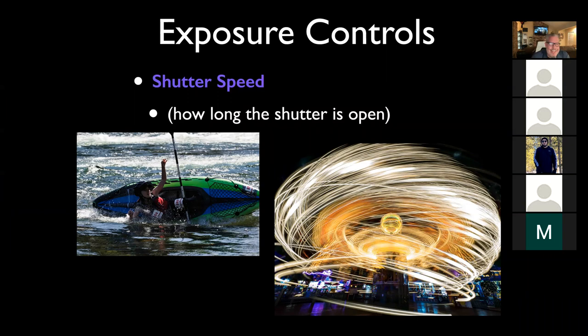The one on the left is a very short shutter speed, like one one-thousandth of a second or faster, because you can see the individual droplets of water. Whereas the picture on the right is a very long exposure - probably 10 to 15 minutes or something. It's a picture of a carnival ride. So shutter speed is how long.